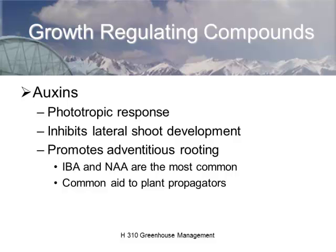With lots of auxin development, lateral shoot development is inhibited, which causes strong single-stem growth. We also use auxins to promote adventitious rooting. The auxins primarily used in adventitious rooting are indole butyric acid (IBA) and naphthalene acetic acid (NAA). The natural auxin is indole acetic acid (IAA), which is not very stable outside the plant — you have to protect it from light or it automatically degrades. These are commonly used by plant propagators for stimulating rooting.